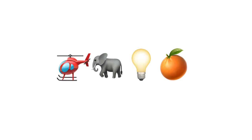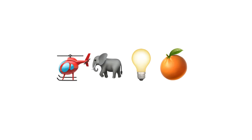Alright, let's work through this together. There are four letters in this word. The first letter is the letter helicopter. If we wanted to spell out this word, it would be: helicopter, elephant, light, orange.